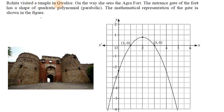Rohitha visited a temple in Gwalior. On the way, she sees the Agra Fort. The entrance gate of the fort has the shape of a quadratic polynomial — a parabolic shape. The mathematical representation of the gate is shown in the figure.